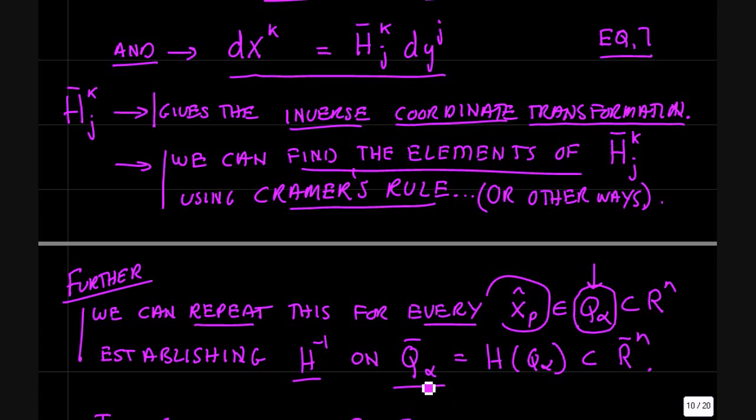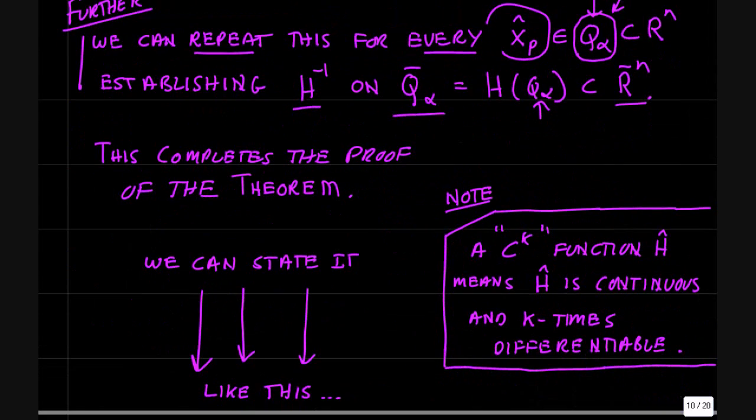And establish h inverse on the image h of Q_alpha in R^n bar, call it Q_alpha bar. So h inverse maps Q_alpha bar back to Q_alpha. So the determinant that we were talking about then becomes a function of points in this region Q_alpha in R^n.